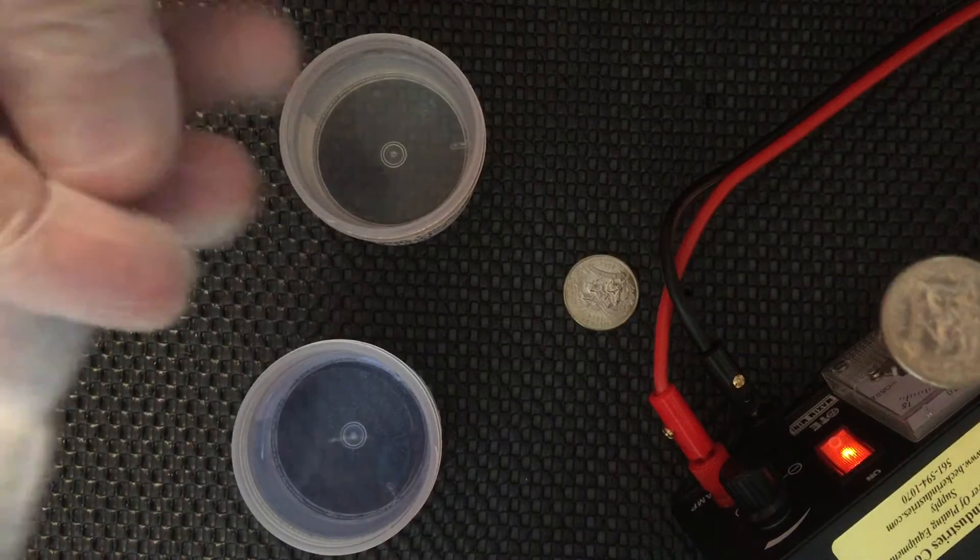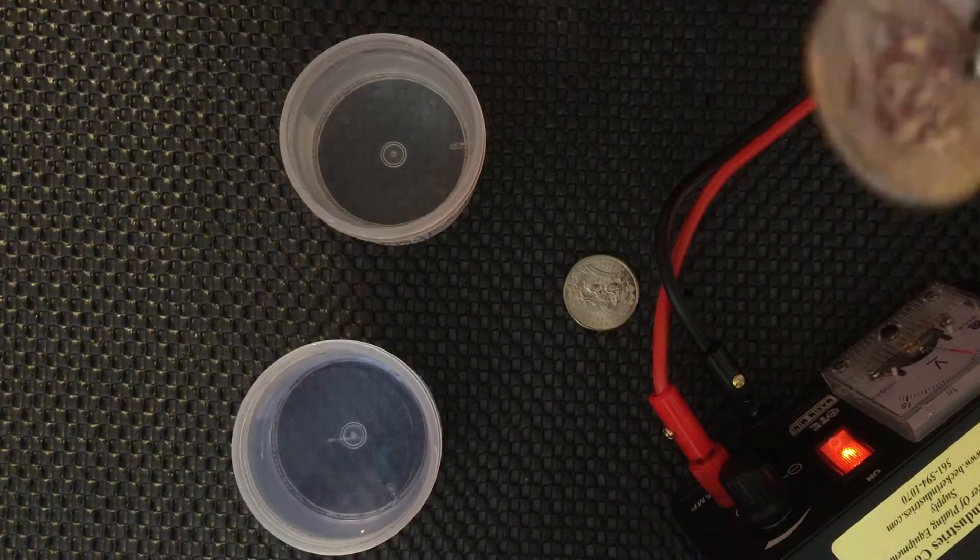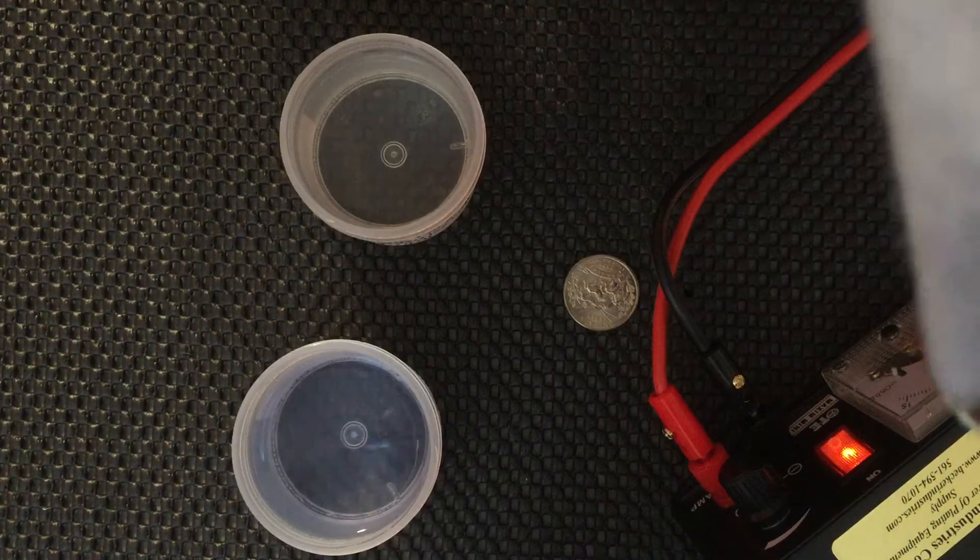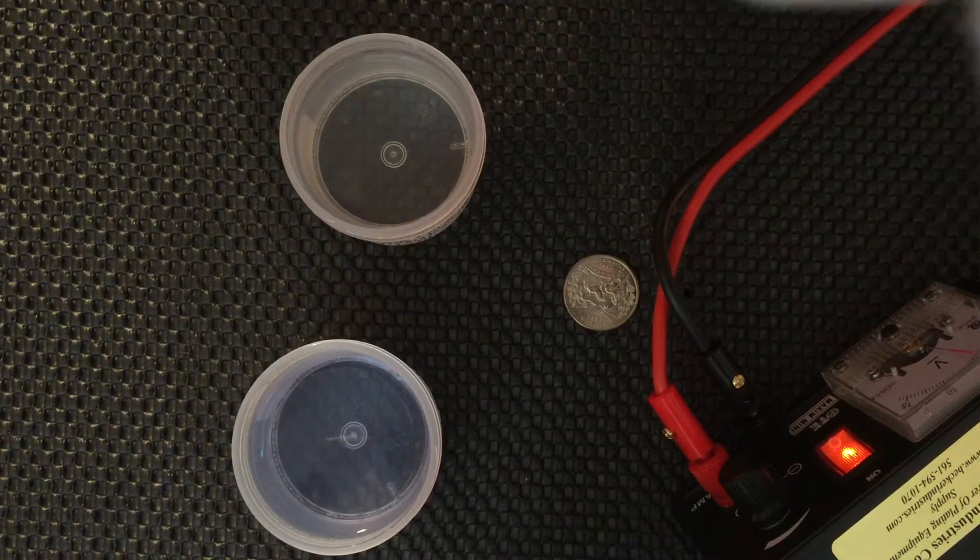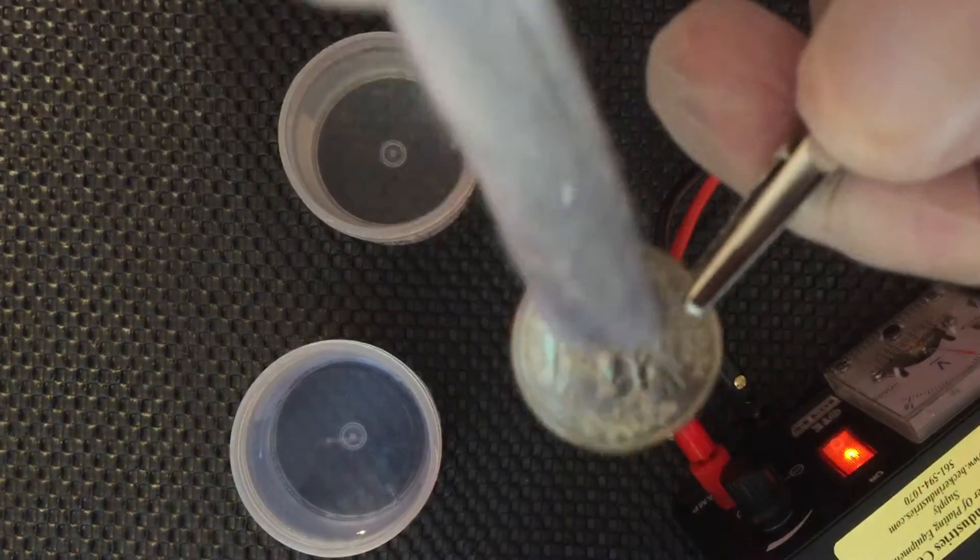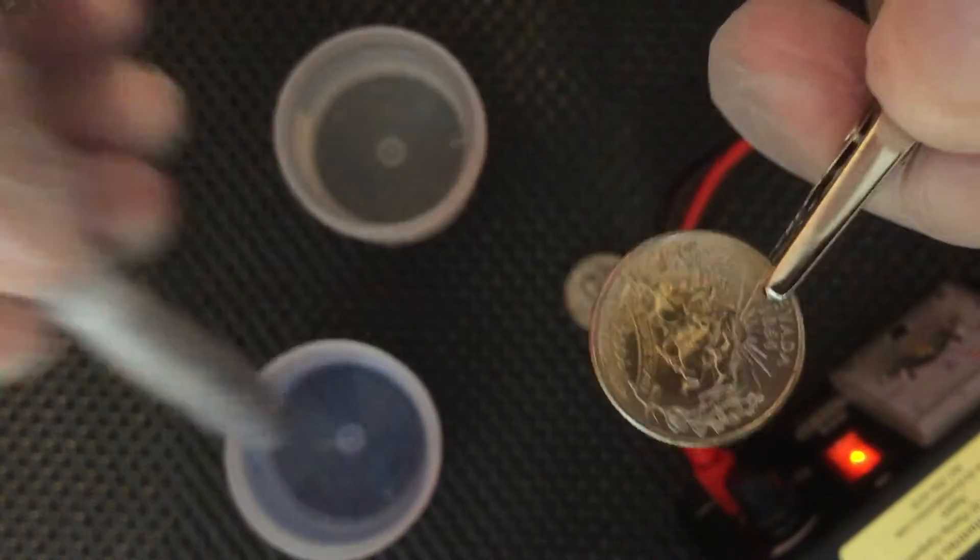What you need to do is connect your negative wire to the coin and put your plating anode in the liquid. Then you're going to start rubbing it in a circular motion. When you start rubbing, the gold is just going to bond to the coin. As you can see, it's already started to bond. This is how brush plating gets done.